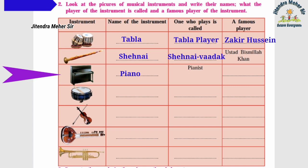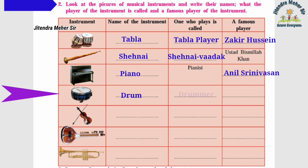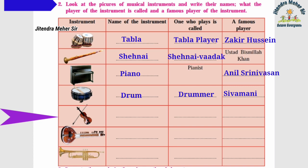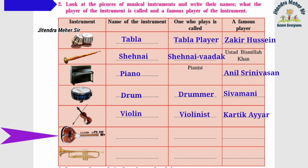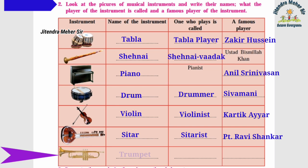Fourth instrument: drum — player called drummer, famous player Sivamani. Fifth: violin — player called violinist, famous player Karthik Ayya. Sixth: sitar — player called sitarist, famous player Ravi Shankar. Last: trumpet — player called trumpeter, famous player Kishore Sodha.